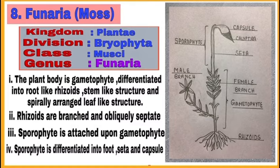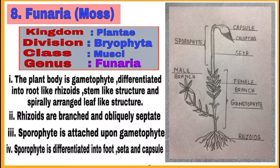Funaria is another bryophyta. The plant body is a gametophyte differentiated into root-like rhizoids, a stem-like structure, and spirally arranged leaf-like structures. Rhizoids are branched and obliquely septate. The sporophyte is attached upon the gametophyte and is differentiated into foot, seta, and capsule. You can note both gametophyte and sporophyte of Funaria in the diagram. Draw this diagram in your notebook.